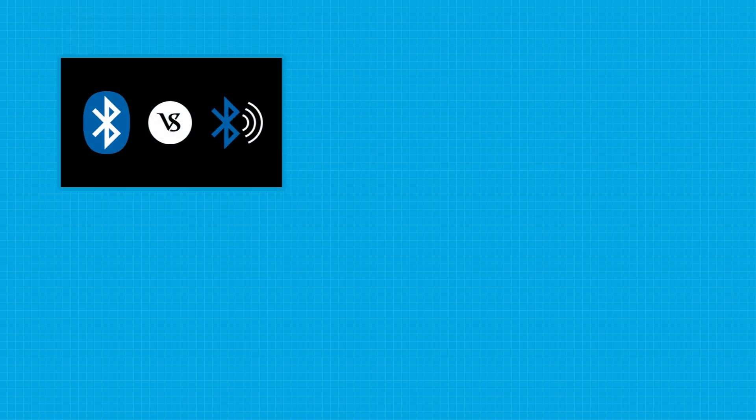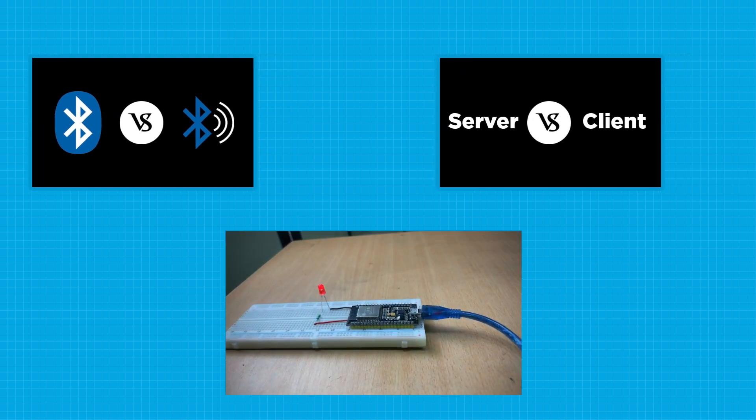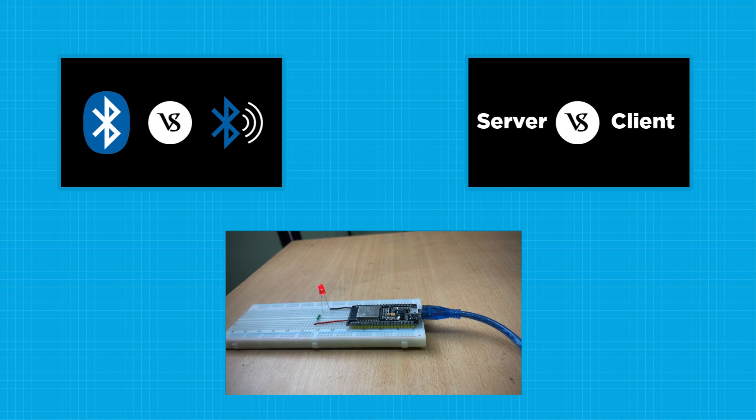Today we learned about the difference between Bluetooth Classic and BLE. We also learned about different modes of ESP32's Bluetooth Classic, like server and client mode, and how to use ESP32 Bluetooth to control an LED. If you like our content, make sure to let us know in the comment section. Share this video with your friends. If you want a more informative blog on this topic, the link is in the description. See you in the next one.